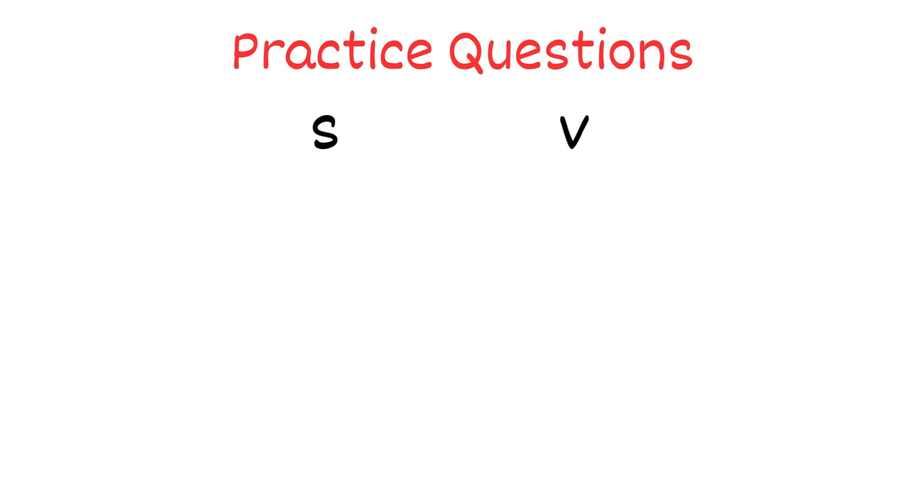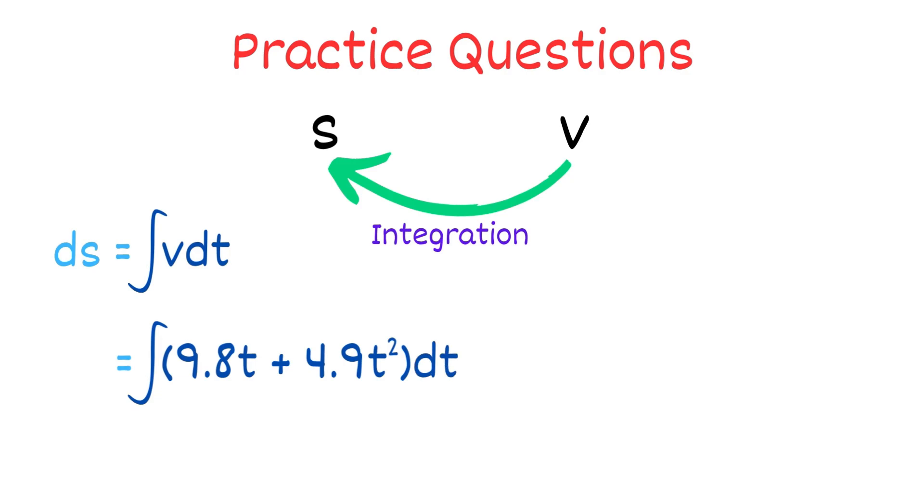Now, we have already discussed to find the displacement, we need to integrate the velocity equation. So, integral of vdt equals integral of 9.8t + 4.9t² dt.